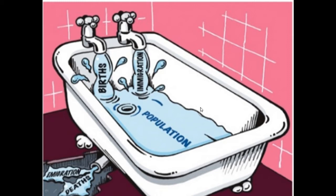Here, this picture gives a clear view about population. If this is the population, these are the incomings: birth and immigration. Immigration means the people who move into an area. And from the exit point: deaths or emigration, meaning the people who are moving out from that place.